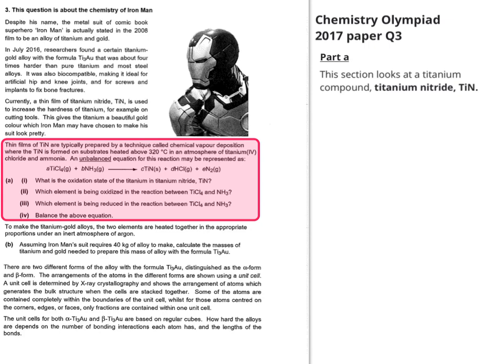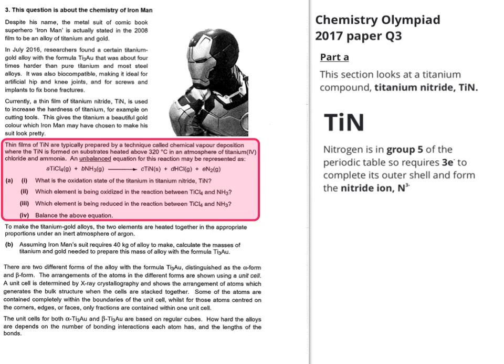Let's look at the oxidation state first. The first thing to do is to look at where nitrogen is in the periodic table. It's in group 5, so it requires three more electrons to complete its outer shell and form the nitride ion. Titanium is a metal, nitrogen is a non-metal. Unless we're otherwise told, we can assume it's going to be an ionic bond between them. This allows us to assign the oxidation state for titanium as 3+.